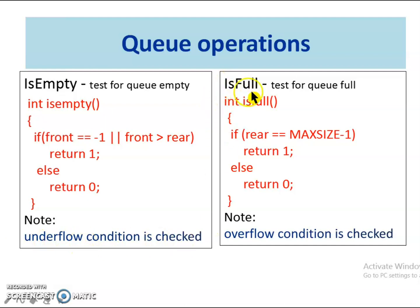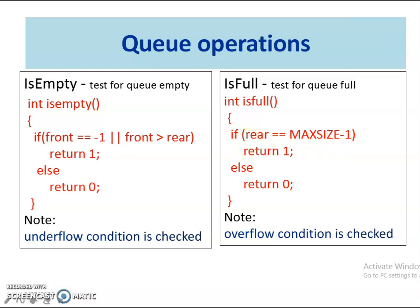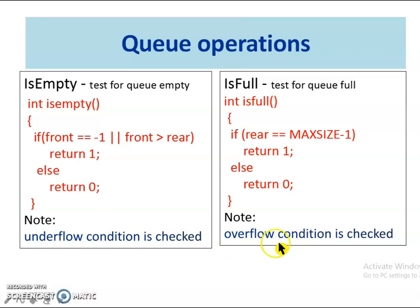The next operation is isFull. This function checks whether the queue is full or not. In array implementation, as we start at index 0, the queue full condition is reached when the index reaches max size minus 1. As rear is pointing to the end of the queue, rear equal to max size minus 1 indicates the queue is full. This function returns true if the queue is full, else it returns false. The queue full condition is also called the overflow condition.